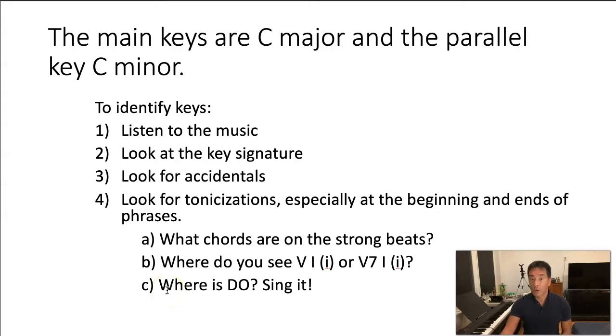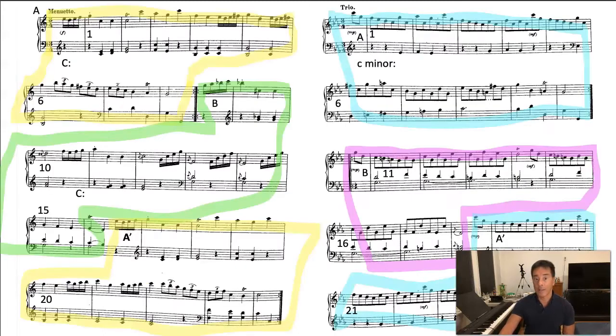Try singing it. Where's do? So let's say you know the piece is in C and you sing do. And it turns out that you're singing C. Well, then you know what key you're in. That might be helpful. Let's go back and look now at the keys that I've identified.